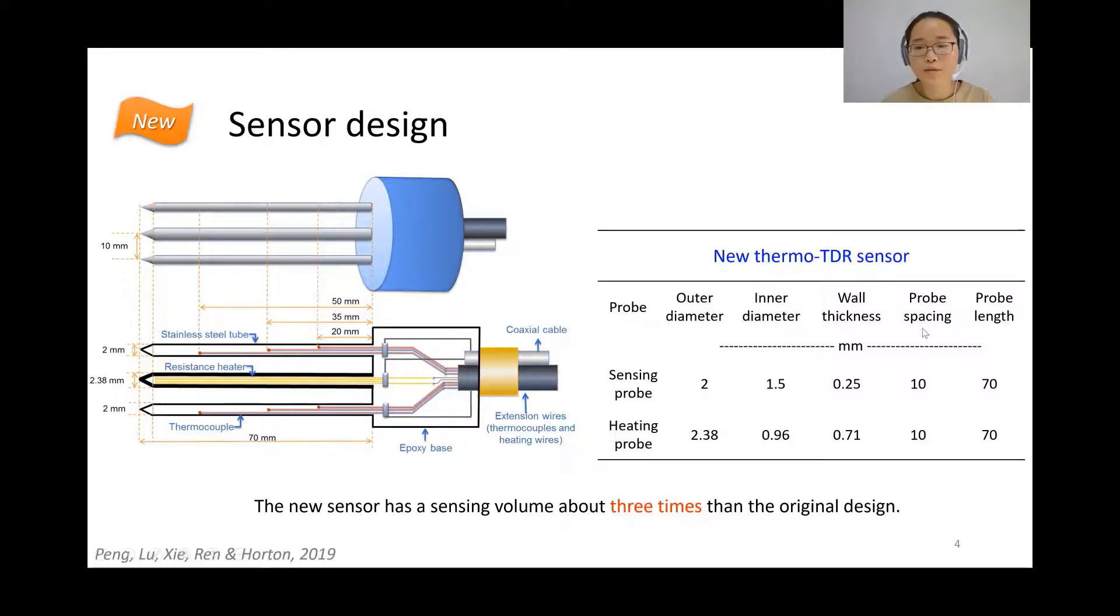We have a very robust sensor with the very thick wall tubing and also we put several thermocouples within one sensing probe to enable us to make the in-situ corrections of the probe spacing. We also found that the new sensor has a sensing volume about three times than the original design. We think it's a very big improvement compared to the original design.